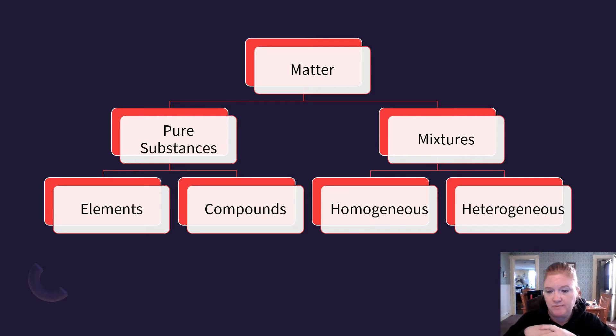All right, so remember this flow chart for matter. Matter is anything that has mass and volume. It's broken into two main categories, pure substances and mixtures. Mixtures are homogeneous, evenly mixed, the particles are evenly distributed. Heterogeneous, not evenly mixed, the particles are not evenly distributed. And then pure substances, one type of matter, and they have definite properties, and broken into either elements or compounds.